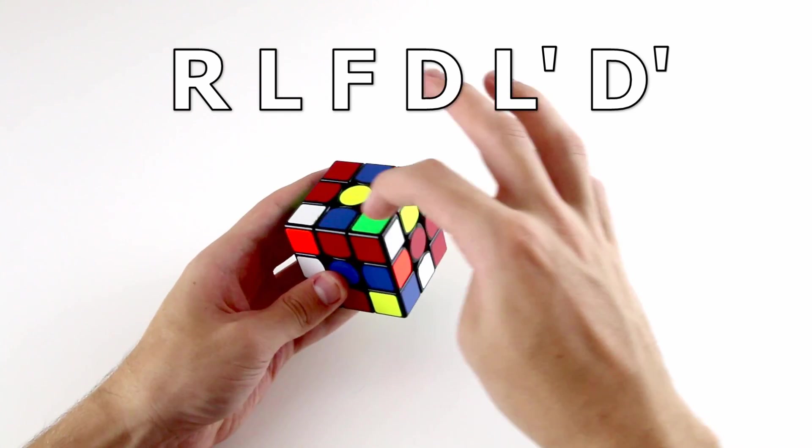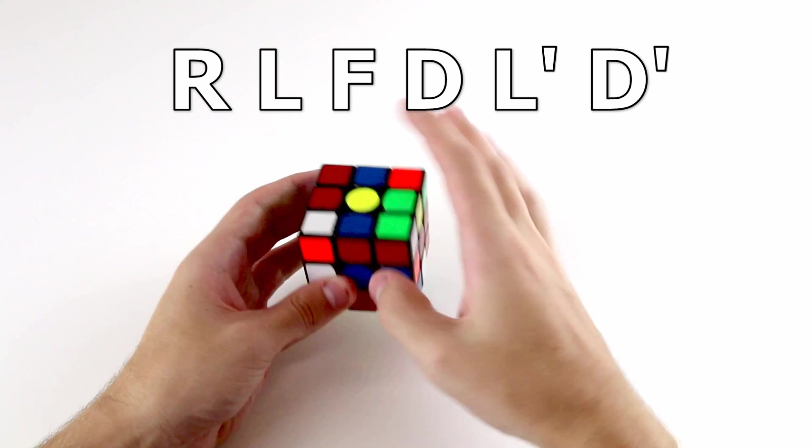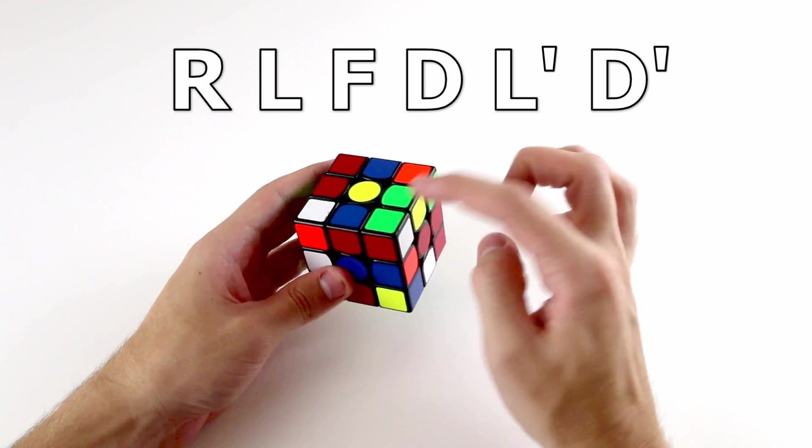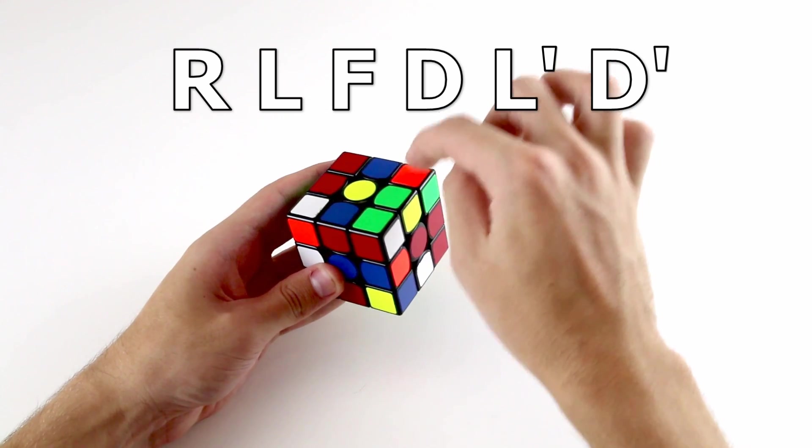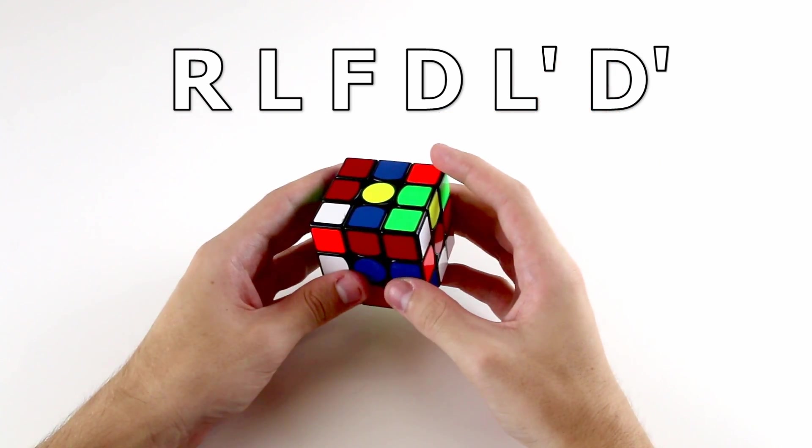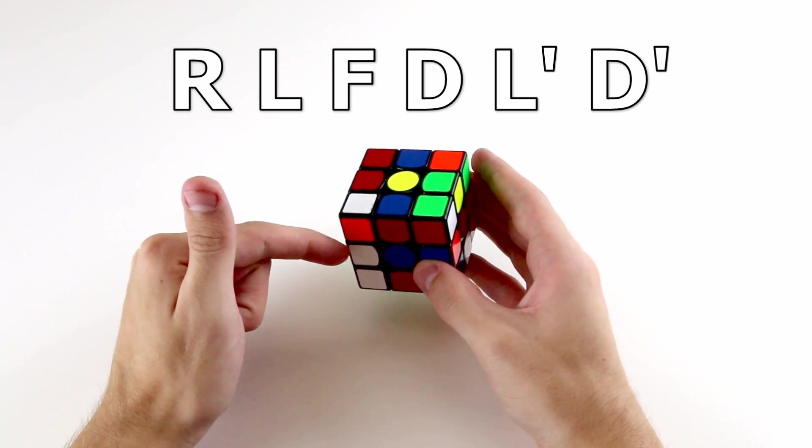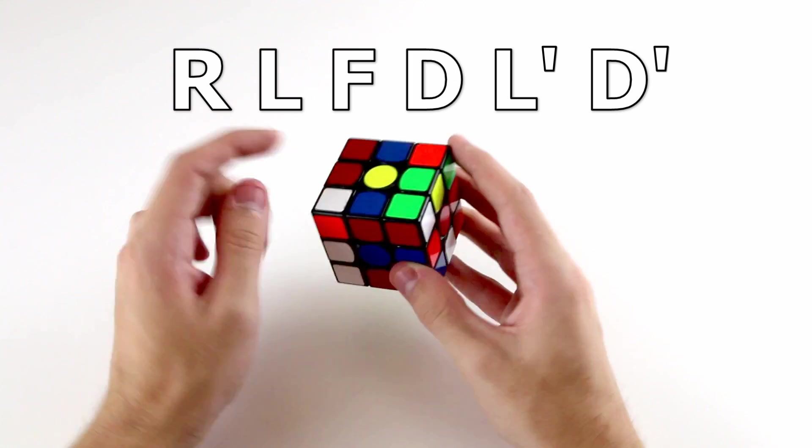Let's try and track where these two pieces will end up during that cross. So if we do an R L F, the R will move this corner piece over to here, and then L and F won't affect it because it's over here. And then when we do a D L' D', the corner over here won't move at all.